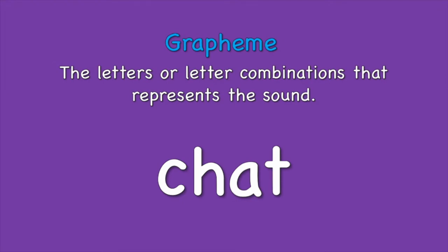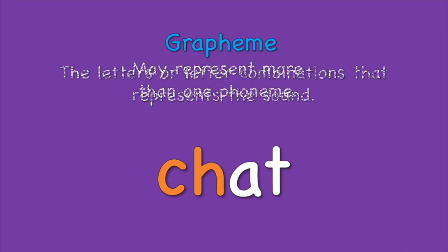Phonemes are often referred to as sounds. Graphemes are the letters or letter combinations used to represent phonemes in written form. In the word chat, the letters c and h make up the grapheme for ch.